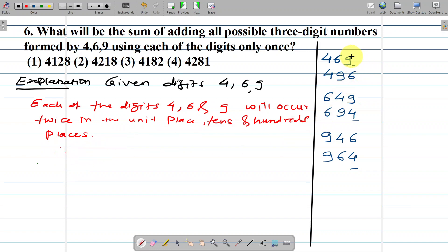So we can calculate: 2 times (4 + 6 + 9) equals 2 times 19, which equals 38. This is the sum in the units place.